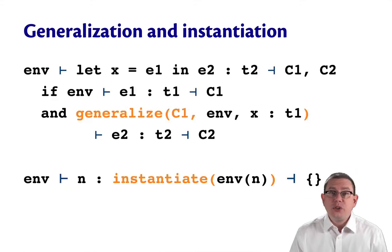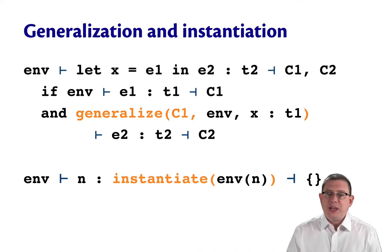To make use of generalization and instantiation, we just need to update two rules in little ways. So the naive let rule we gave is almost correct, it's just we need to generalize a piece of it. So when we go to put the type T1 of the binding expression E1 into the environment, we generalize it to create a type scheme.